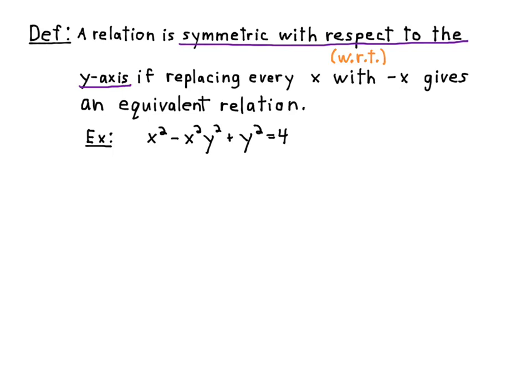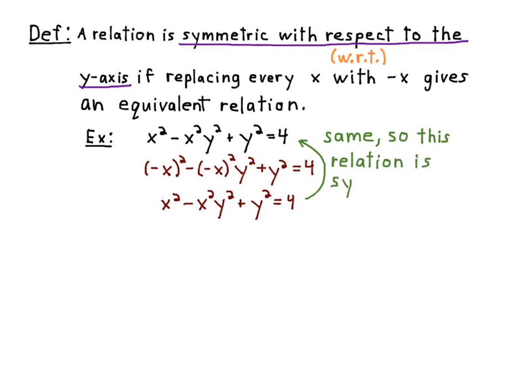Now, of course, if it's squared, you need the minus x in parentheses. So you put the minus x in parentheses on each one, and then you're squaring out all those negatives. So you just get x squared for each of those. So you get x squared minus x squared y squared plus y squared equals 4, the exact same thing as we started with. So this relation is symmetric with respect to the y-axis.